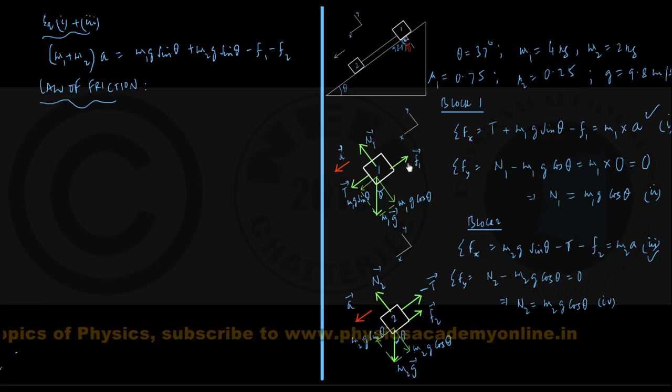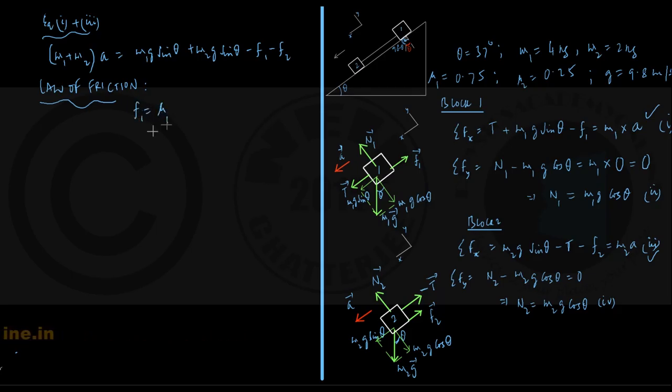So, the frictional force f1 acting on block 1, we might write it to be frictional coefficient mu1 into the normal force n1.